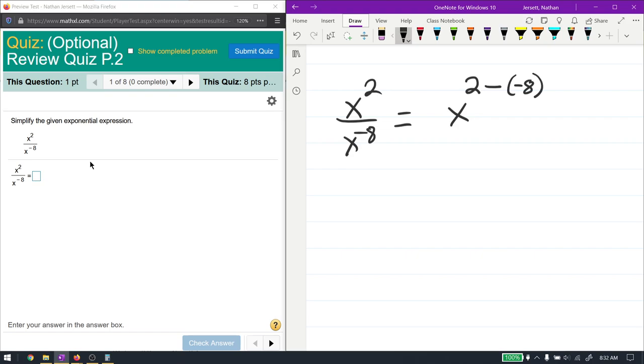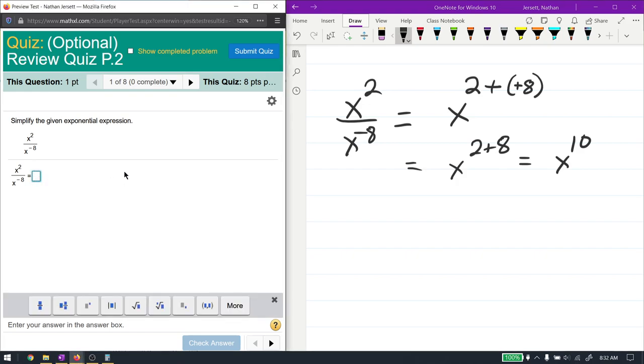Negative and a minus, they cancel, giving us x to the 2 plus 8, which is just x to the 10. That's how you use that quotient rule, as it's called.